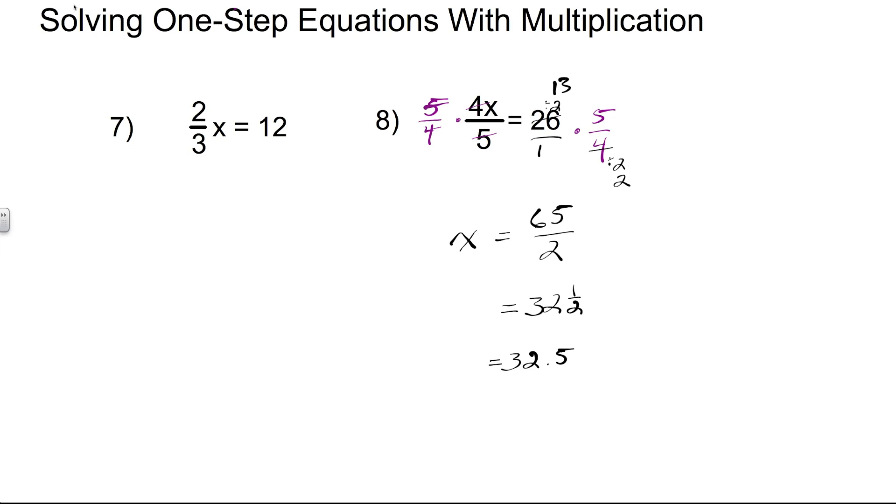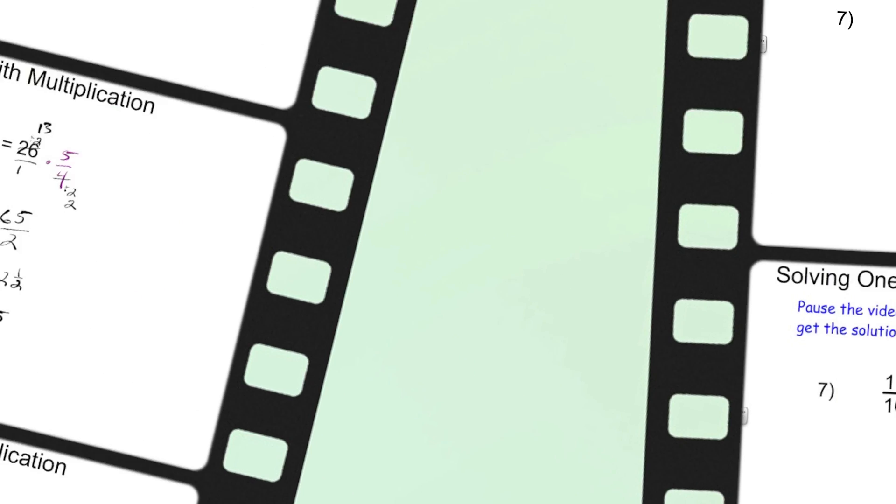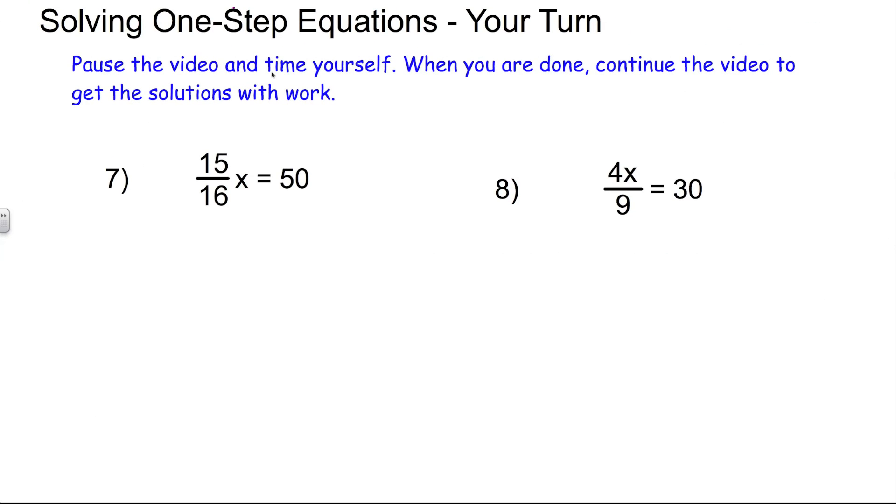The interactive part of this lesson is coming up. We have some problems for you to do. Solving one-step equations, your turn. In the previous examples, 7 and 8, I showed you two different ways to solve equations that had fractional coefficients. You can either multiply by the reciprocal, or you could multiply both sides by the denominator, then divide both sides by the coefficient that is left in front of the x. What you're going to do is pause the video and time yourself. Anywhere between, I'd say in this case, 4 to 7 minutes should be sufficient. When you're done, unpause the video and get the solutions and check your work.